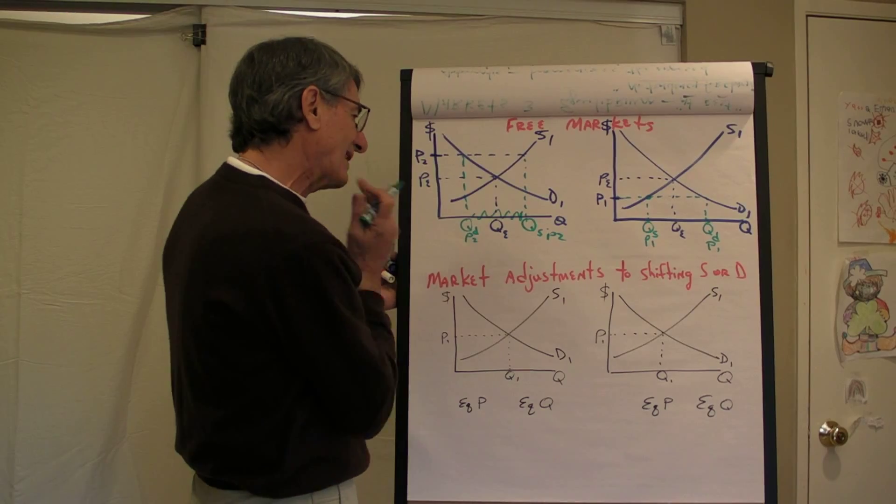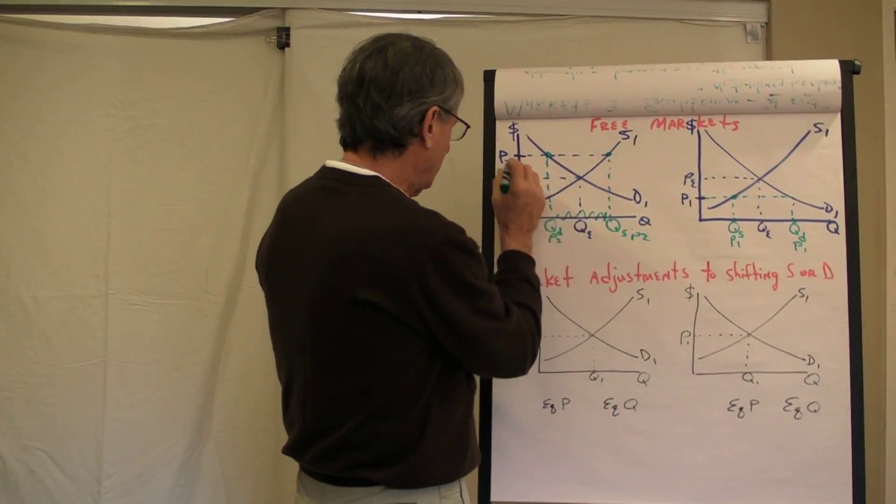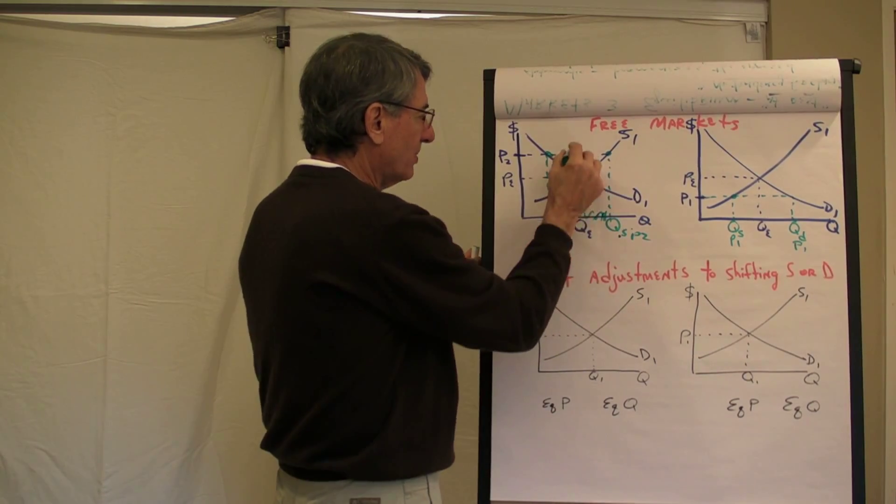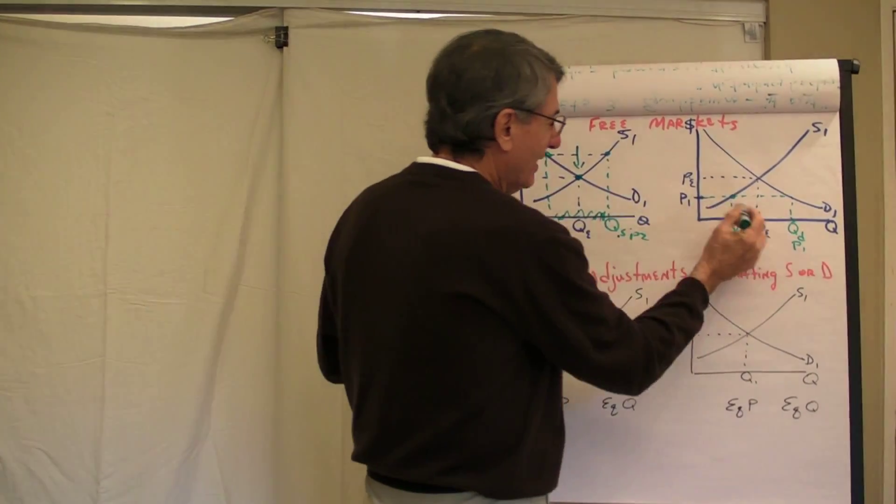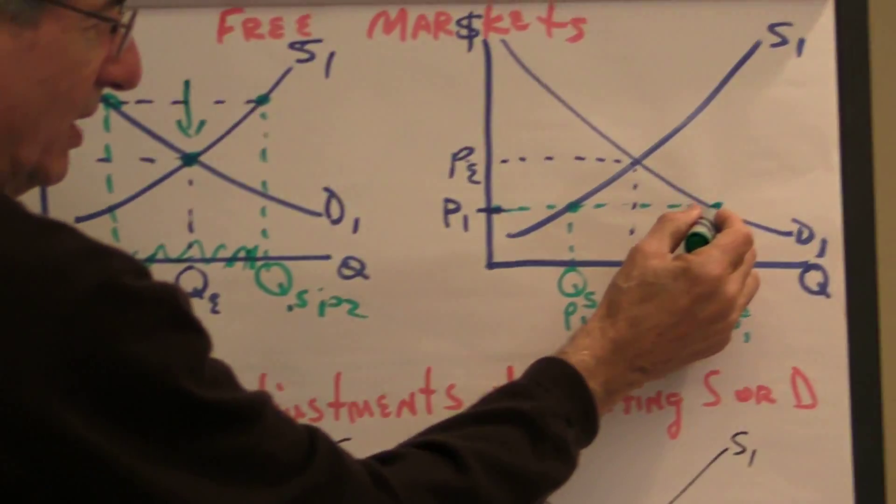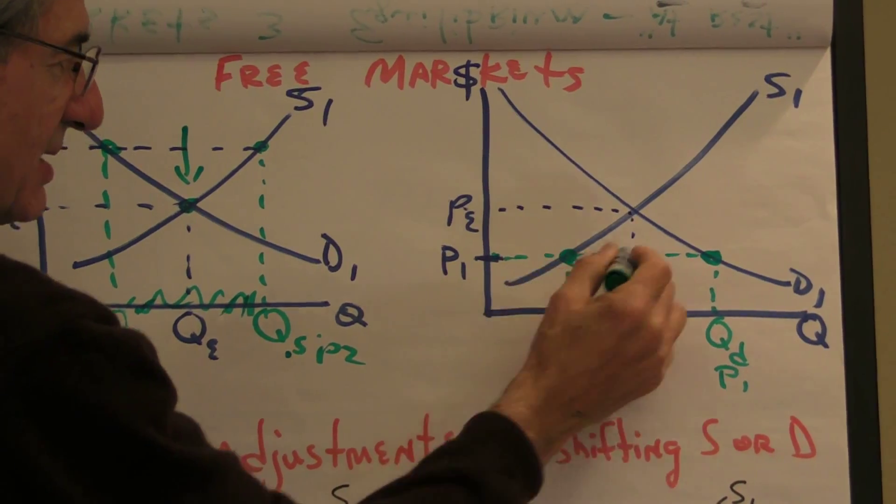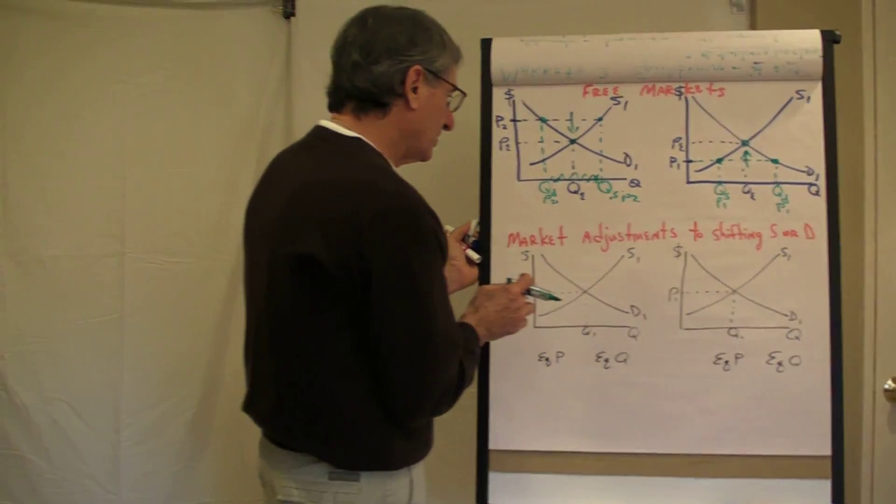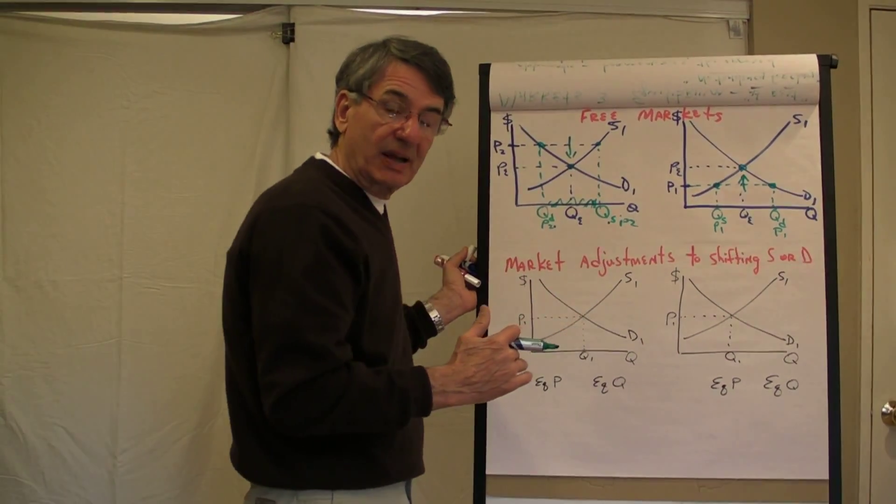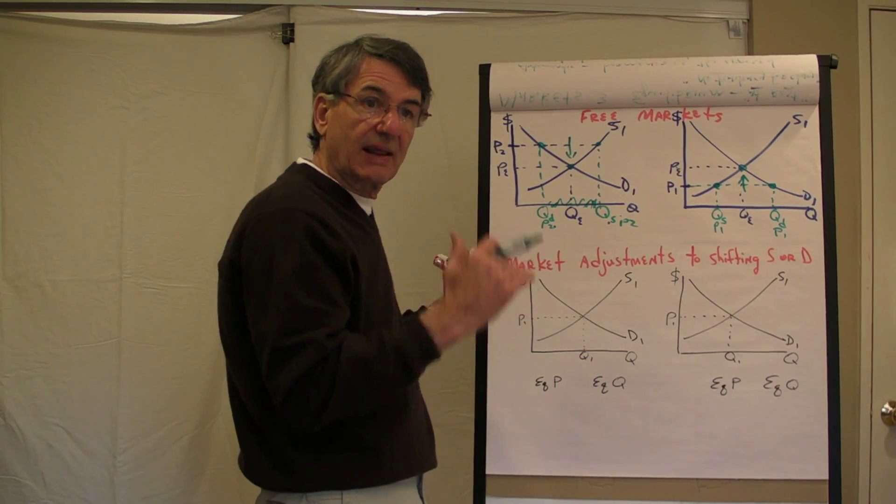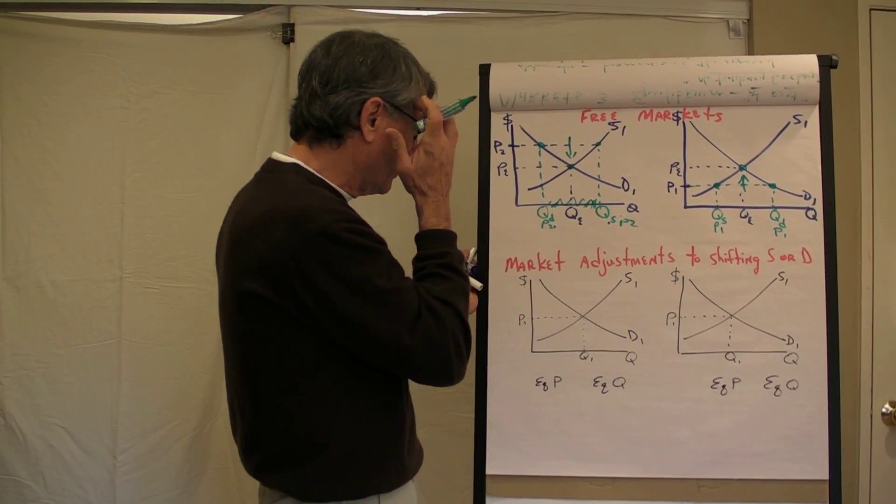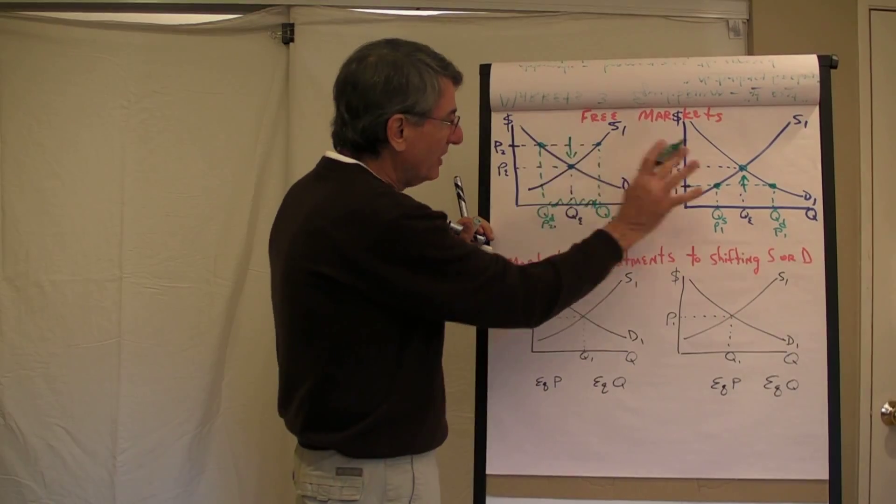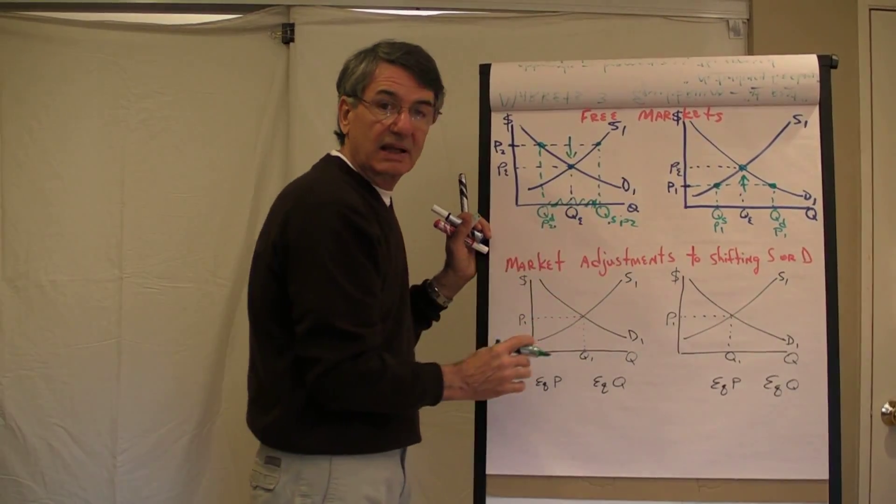So if the price is P2, then that will create quantity supplied greater than quantity demanded. There's the surplus and downward pressure on price until we get to equilibrium. If there is a price below equilibrium at P1, that will be the quantity demanded. That's the quantity supplied upward prices until we get to equilibrium. So, the adjustment mechanism is that a price other than equilibrium either creates a surplus or a shortage, and that moves the price toward equilibrium.